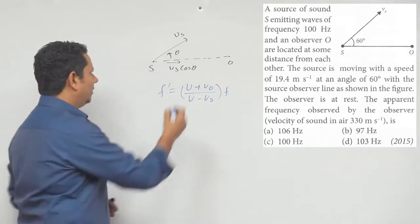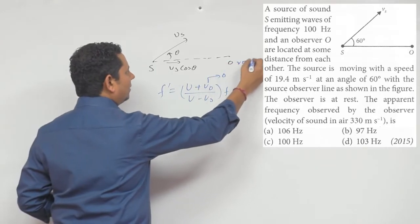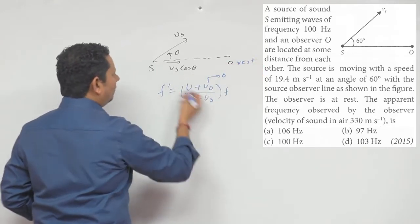We use this formula here, the velocity of observer is zero, because the observer is at rest, Vs cos theta. So,